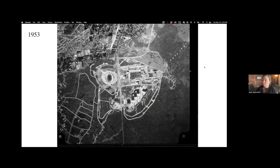In 1953, we're seeing a sharper image — some of the image quality also varies over time — but we're seeing more completion of the campus, though still a lot of wide open space around it.